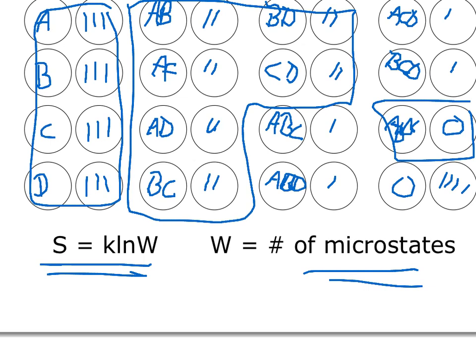For example, there are six microstates, these six that I circled here in the middle, that have two particles on the left and two on the right. Now, the Boltzmann constant has a value of 1.38 times 10 to the minus 23. That's 1.38 times 10 to the minus 23 joules per Kelvin mole. Pretty small number.